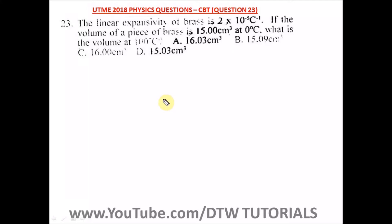Question 23 of the UTME 2018 physics past question. The linear expansivity of brass is 2 × 10⁻⁵.